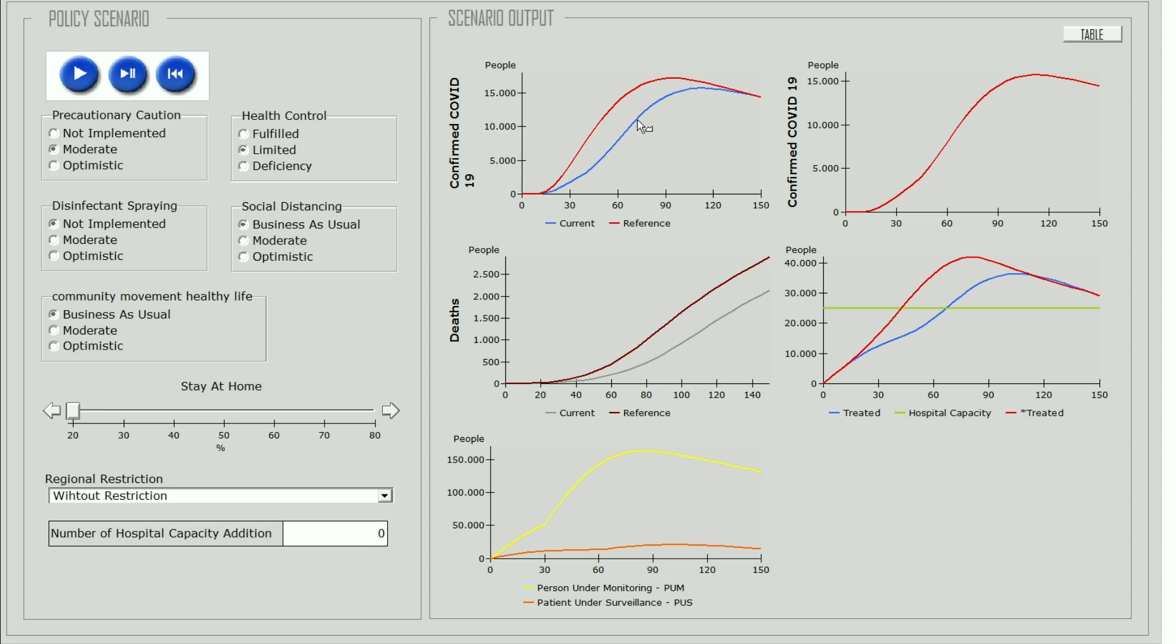In the second graph, the increase is still possible to happen if there is no progressive treatment. Furthermore, there is limited number of health facilities and medical personnel.